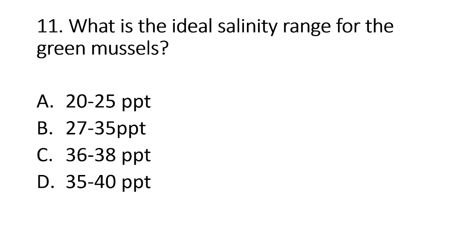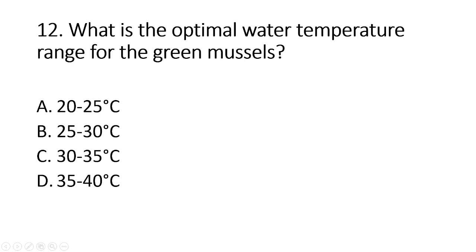Number 11. What is the ideal salinity range for the green mussels? A. 20–25 ppt. B. 27–35 ppt. C. 36–38 ppt. D. 35–40 ppt. The answer is letter B, mussels grow best at 27–35 ppt. Number 12. What is the optimal water temperature range for the green mussels? A. 20–25 degrees Celsius. B. 25–30 degrees Celsius. C. 30–35 degrees Celsius. D. 35–40 degrees Celsius. The answer is letter A, mussels would best grow at 20–25 degrees Celsius.